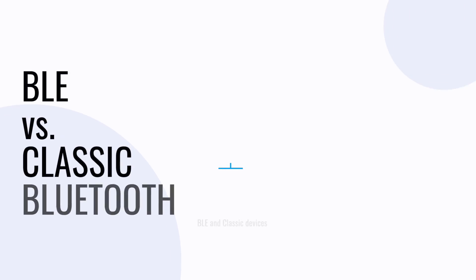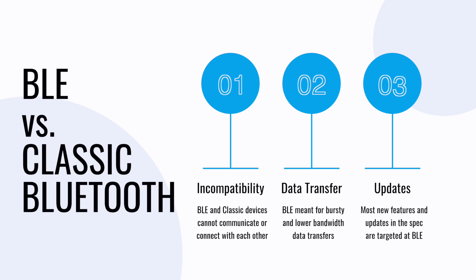There are a few differences between BLE and Classic Bluetooth. First, they are incompatible with each other, so if you have a BLE device and another Classic Bluetooth device, they cannot connect with, discover, or communicate with each other. Second, BLE is meant for data transfers that are more bursty in nature and do not require high bandwidth. And third, it's important to know that since the release of BLE in 2010, the vast majority of updates to the Bluetooth specification has been for BLE more than for Classic Bluetooth.